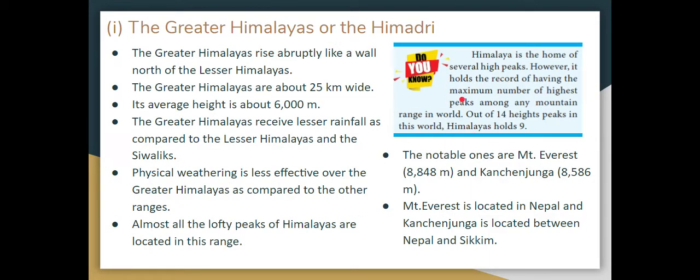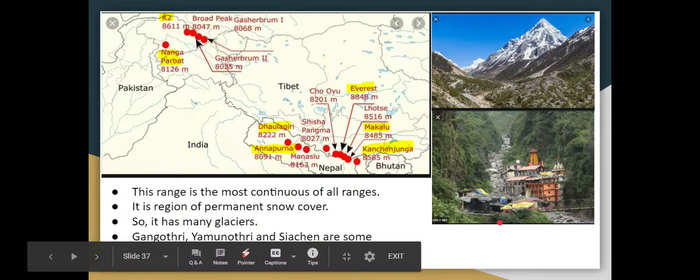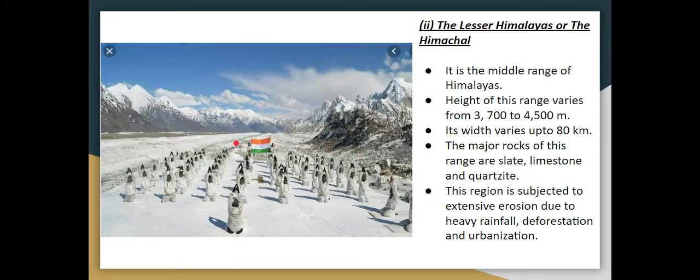The Himalayas contain the highest peaks in the world. Of the top 14 highest peaks in the world, 9 peaks are in the Himalayas. The Greater Himalayas form a continuous range, and there are many glaciers in the area — including Gangotri, Yamunotri, and the Siachen Glacier.